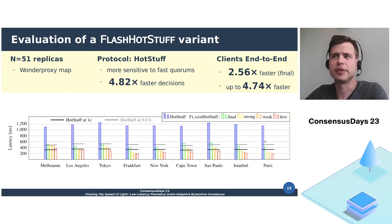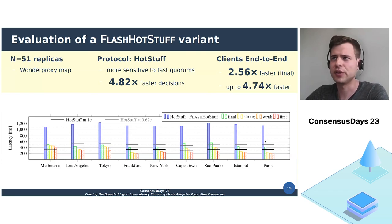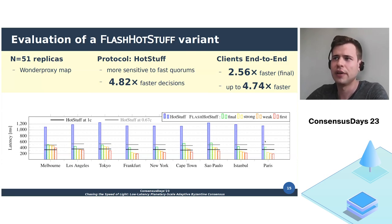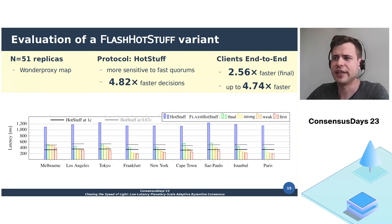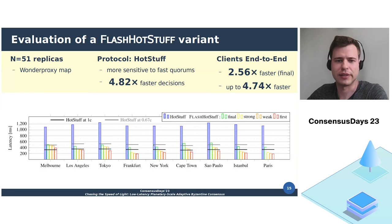We also wanted to show that the underlying principles of Flash Consensus are generic enough to be used with other quorum-based BFT protocols. This is why we incorporated its features into HotStuff, yielding a Flash HotStuff variant. Since HotStuff uses more communication steps in its agreement pattern, it is even more sensitive to how fast progress-making replicas are connected. In an evaluation within an even larger network, we observed that Flash HotStuff could make 4.82 times faster decisions. The average speedup across all client locations for the final level was 2.56 times faster, and for the speculative levels the speedup was even higher. In most cases, the latencies Flash HotStuff achieved also beat the hypothetical speed for HotStuff in an ideal network, or even match HotStuff with links transmitting at the speed of light.